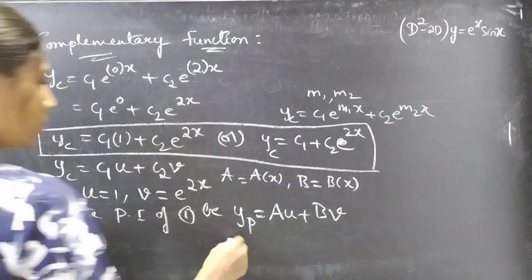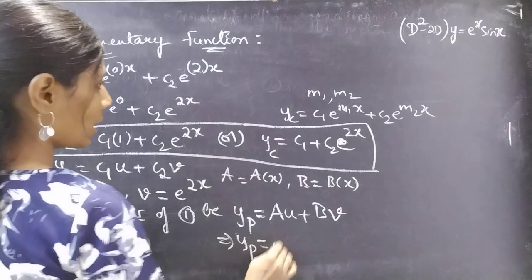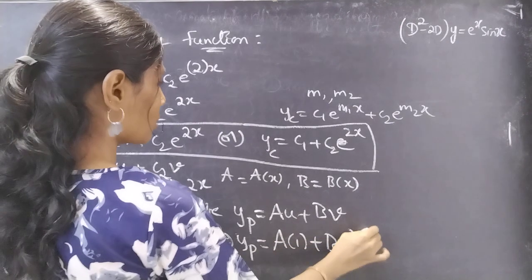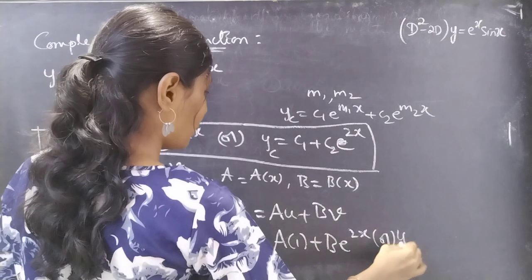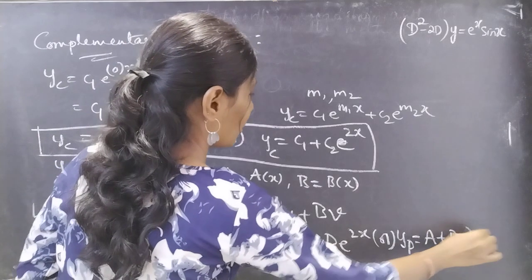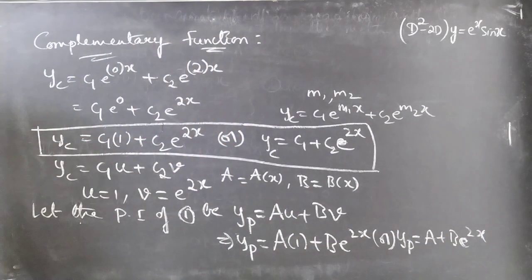So yp = au + bv = a·(1) + b·e^(2x), which gives yp = a + b·e^(2x). We need to find a and b using the formula for the method of variation of parameters.